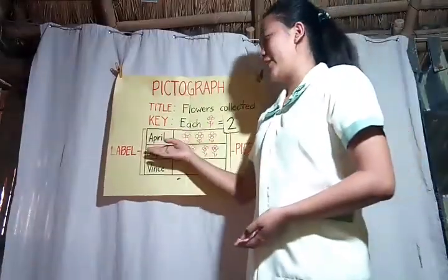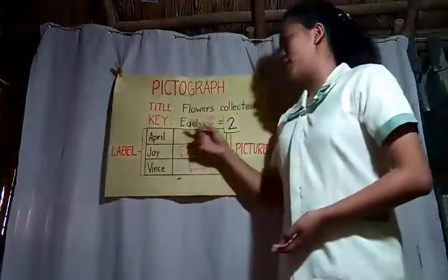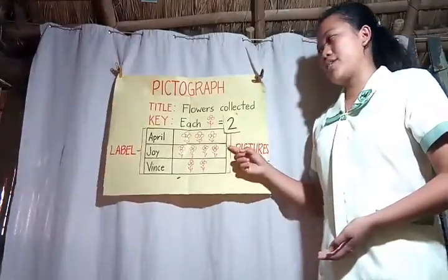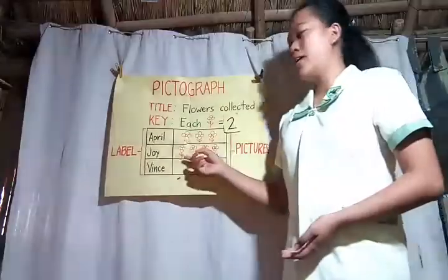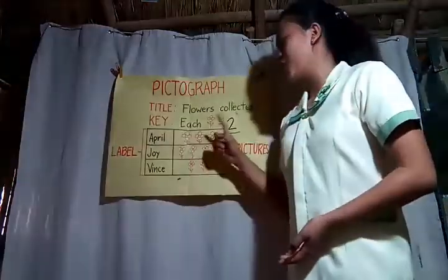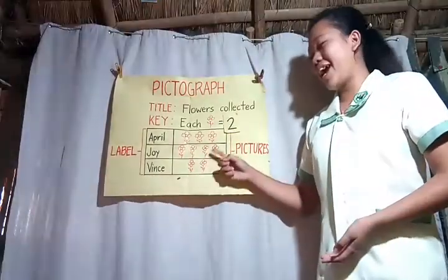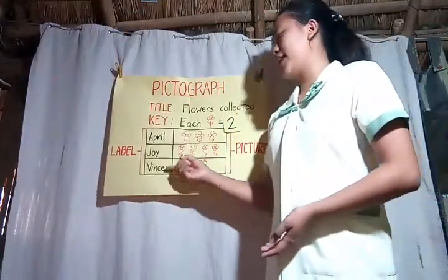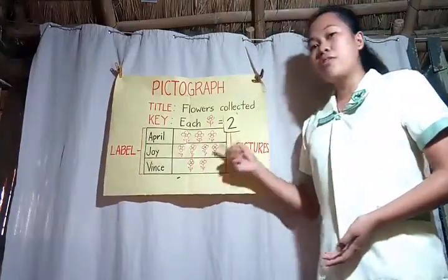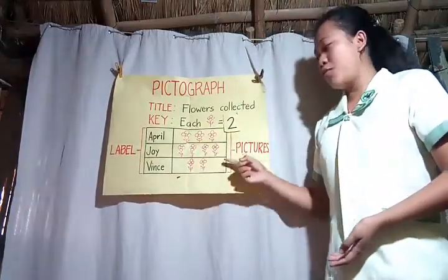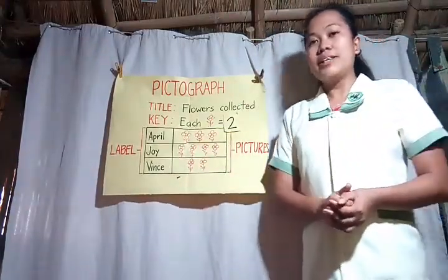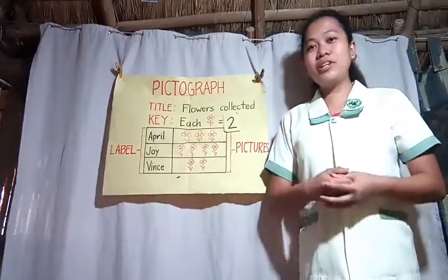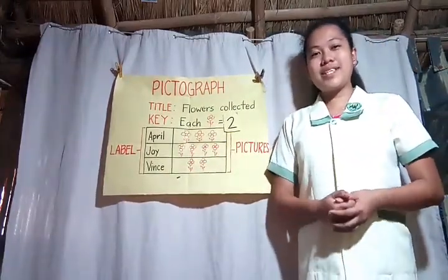So in the pictograph with a scale of two, April collected two, four, six — six flowers. Joy collected two, four, six, eight — eight flowers. And Vince collected two, four — four flowers. That is interpreting data presented in a pictograph without and with scales.